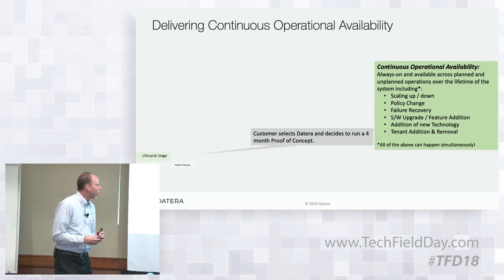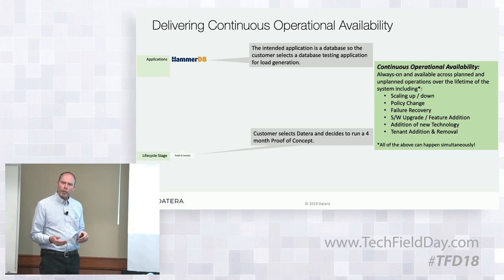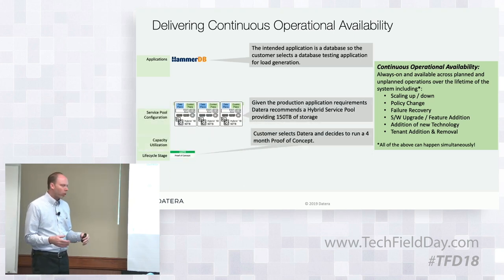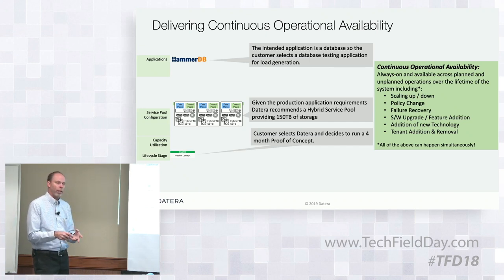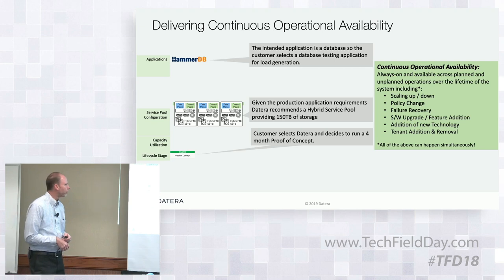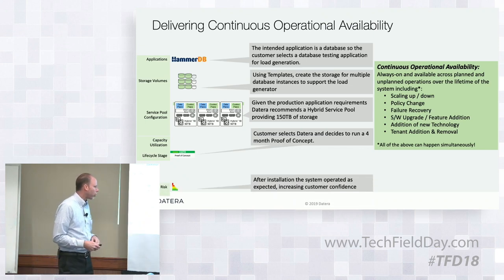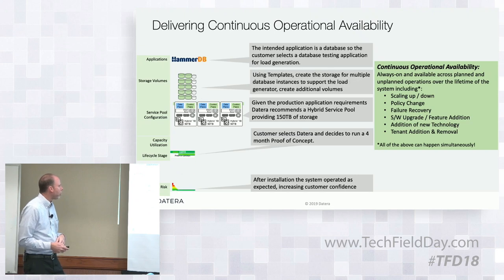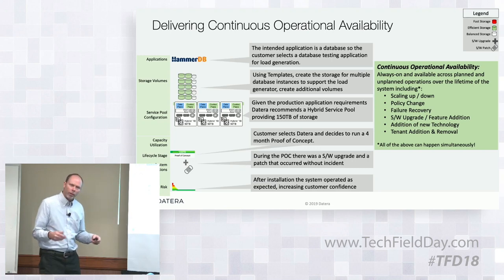Let's run through an example. A customer has selected Dayterra and will run a proof of concept. Their production application is a database, so they select a load generator for a database application. We look at the production requirements and suggest three hybrid nodes, supporting a wide range from Optane or NV memory down to hard drives and SSDs. They use the application templates to create storage, and after installation run typical things — confidence improves, they create volumes, and during that time we do a patch and a software upgrade.